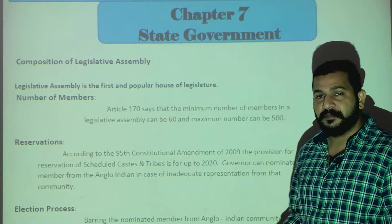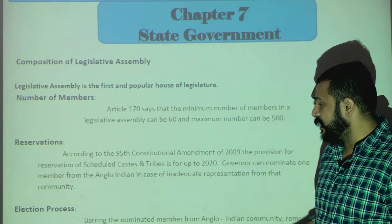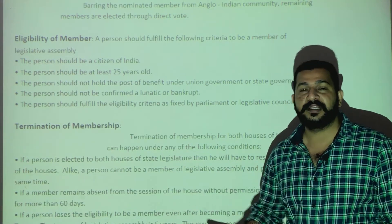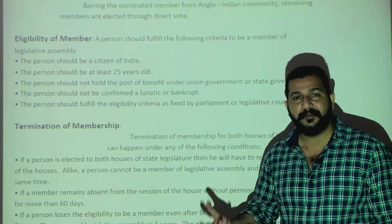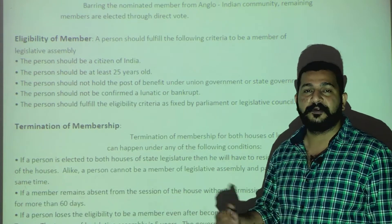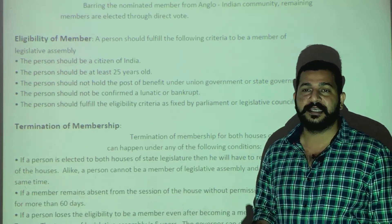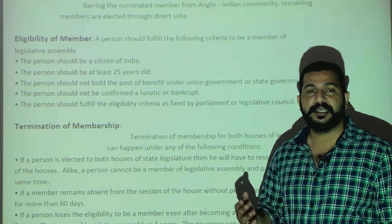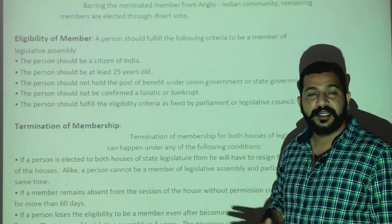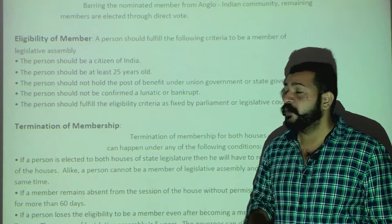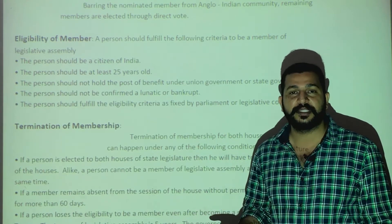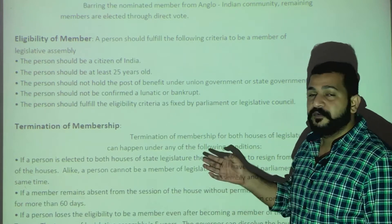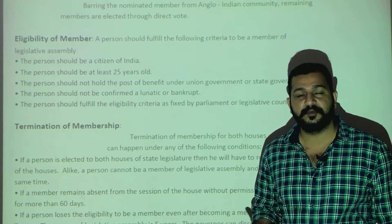Now, the election process. We have nomination and election. Nomination means the governor refers or appoints a name — Anglo-Indians are nominated by the governor. Election means the voting system through which we can vote directly. Those who are not nominated — the remaining members within the minimum 60 and maximum 500 — will be elected through the direct vote system.